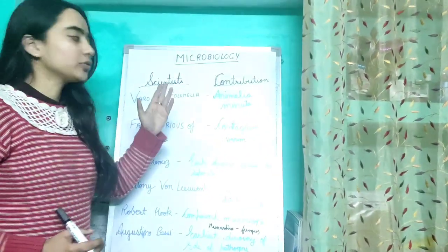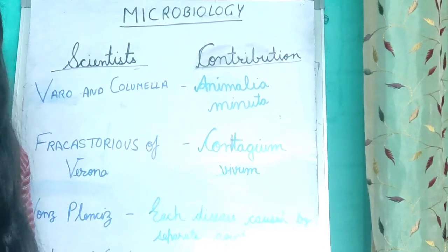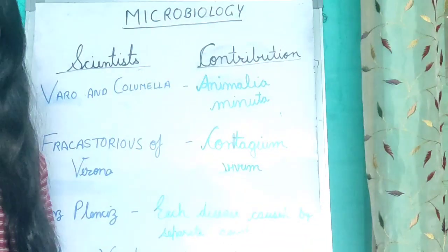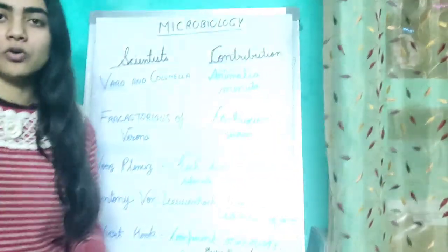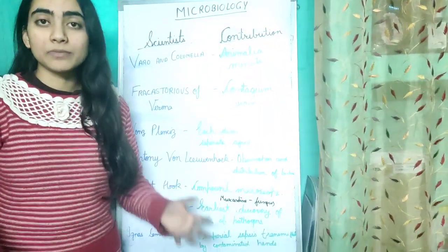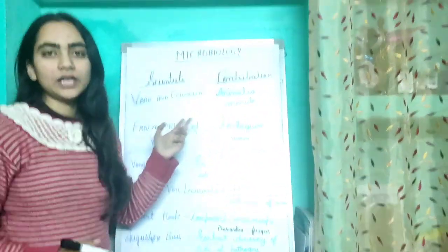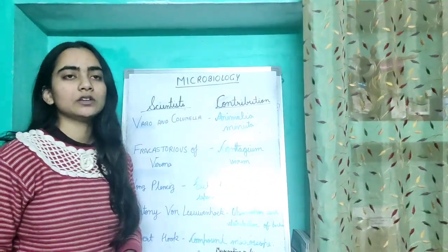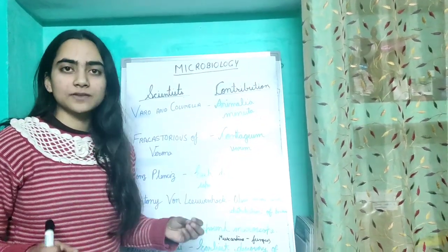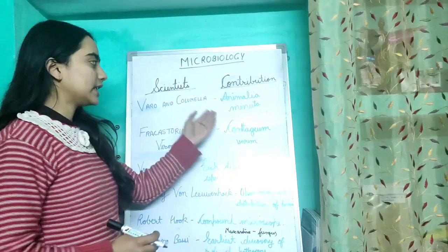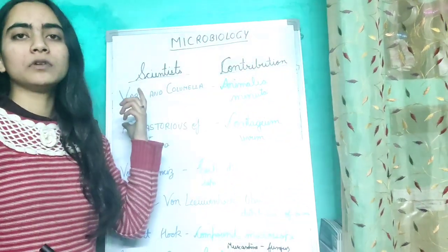These are some scientists and their contributions I have written on the board. Notes will be available in the description, so stay until the end of the video so that you don't miss any point or any particular scientist. First we have Varro and Columella, who postulated that disease is caused by invisible organisms called Animalia Minuta.